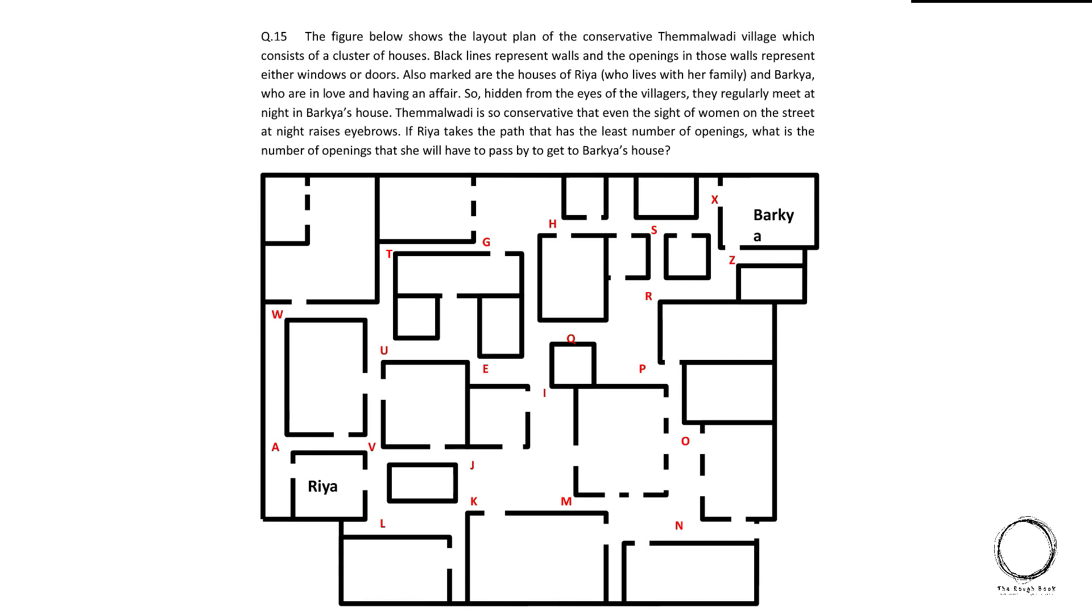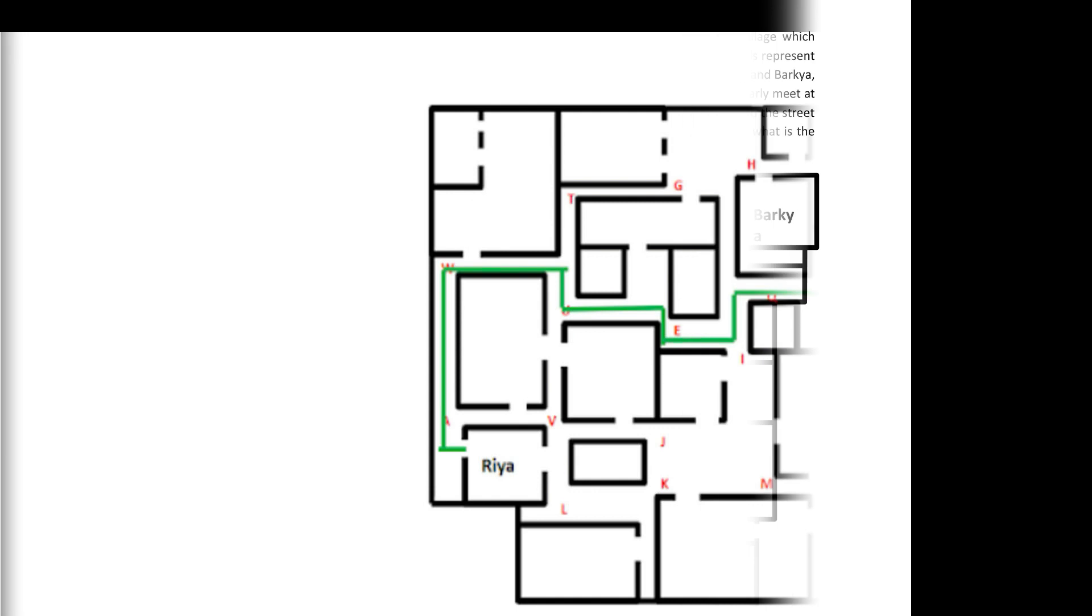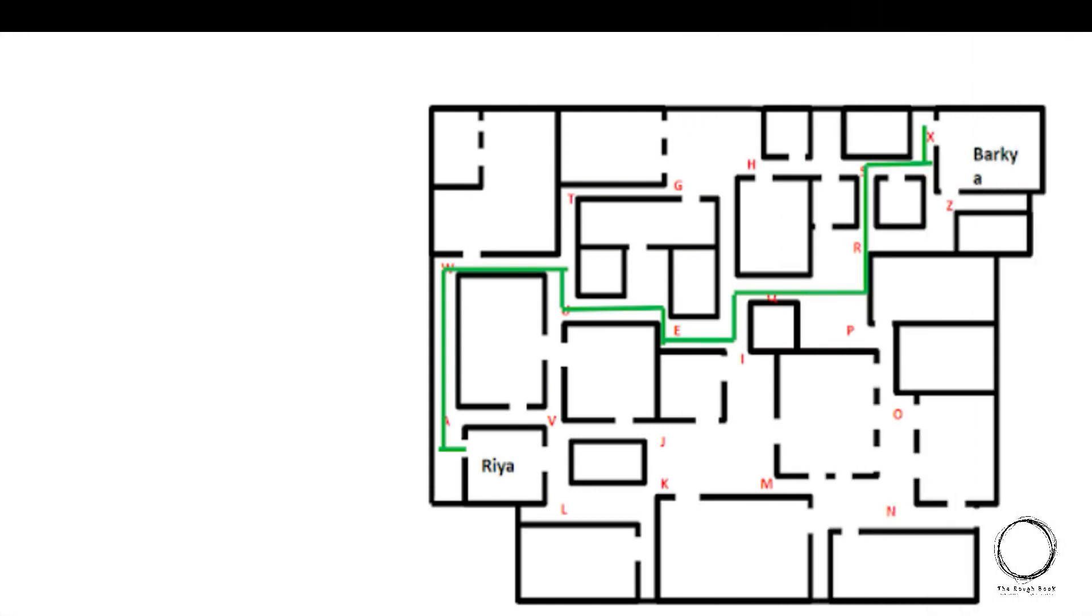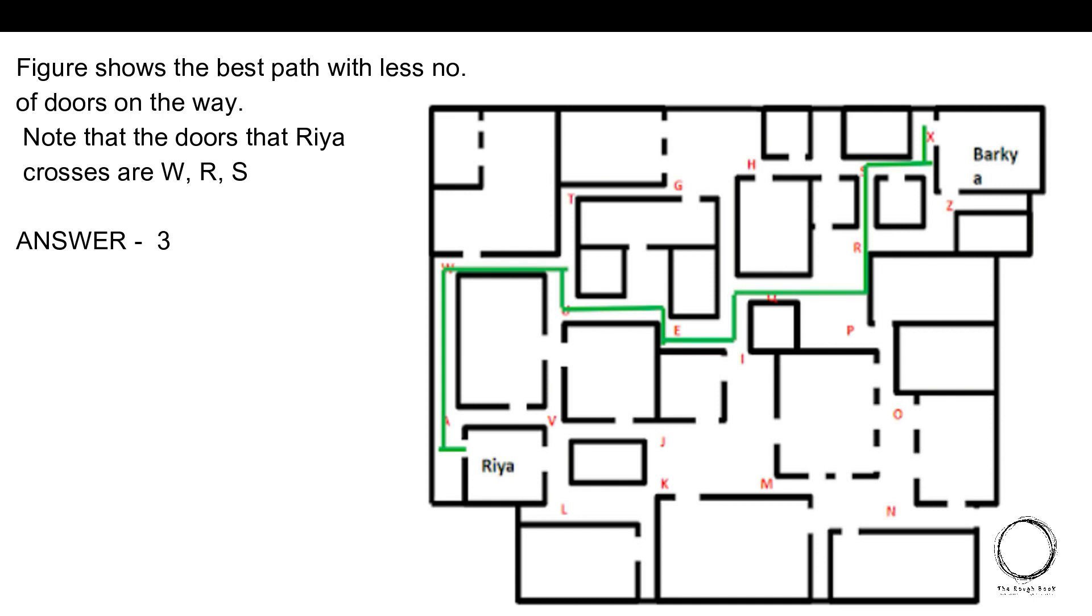If Ria takes the path that has the least number of openings, what is the number of openings that she will have to pass by to get to Barkha's house? So here we have to see how can Ria sneak out at night without having to cross many openings. So in this case, this is the image and the green line shows how she can sneak out without facing more openings. Note that the doors that Ria crosses are W, R and S. So the answer is 3.